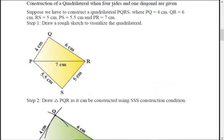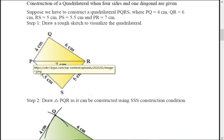Let's start with the case where four sides and one diagonal are known. In quadrilateral PQRS: PQ = 4, QR = 6, RS = 5, PS = 5 — all four sides are known — and diagonal PR = 7. To construct this, first draw the diagonal PR of length 7.